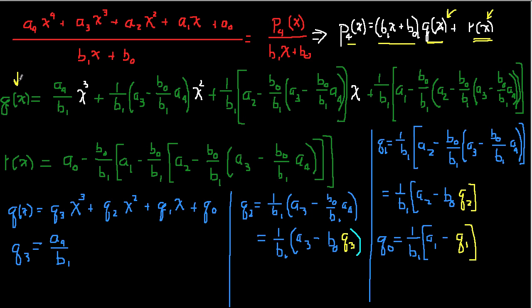I've had you do this for a general third-order polynomial, and it is a bit tedious, but it's worth trying for this fourth-order case too. The quotient q(x) is given by this expression: the coefficient of x³ is a₄/b₁, the coefficient of x² is given by a further expression, and so on down to the constant term. The remainder r(x) is also shown here.